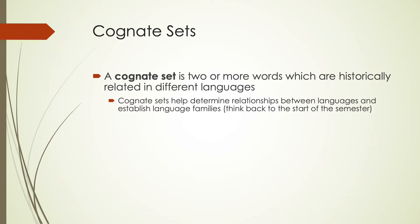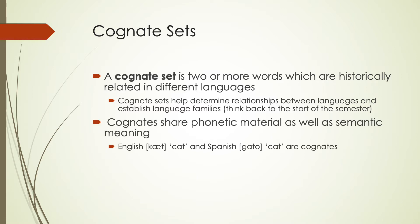Specifically, cognates share phonetic material but they also share semantic meaning — both pieces are extremely important. For example, the English word 'cat' and the Spanish word 'gato,' which means cat, would be cognates. Even though they're not the exact same sounds, they have similar sounds. The first sounds are both velar plosives — one is voiced, one is voiceless. The vowels are both low vowels, one just a little further front than the other. And the T is exactly identical in both languages.